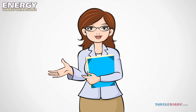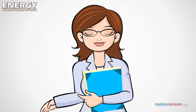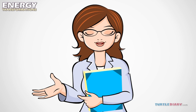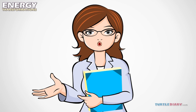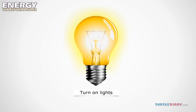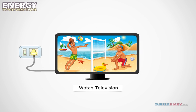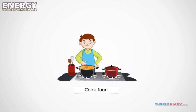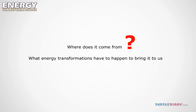Electricity is a kind of energy that can flow from one place to another. We use a lot of electricity in our homes. We turn on lights, use computers, watch television, and cook food. Where does it come from? What energy transformations have to happen to bring it to us?